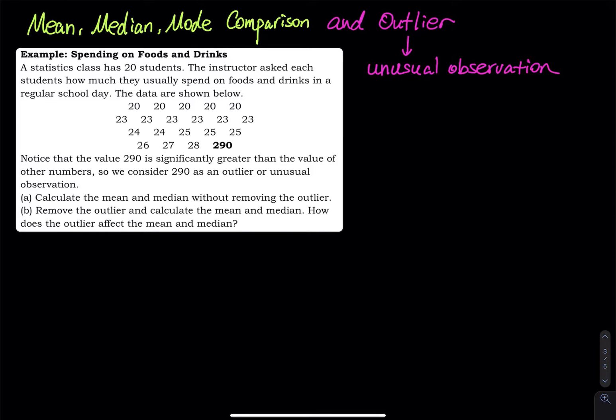So most people spend around 20, 23, 24, 25, 26, 27, 28 bucks, but somehow one student spent $290. So now we're thinking that the $290 can be an outlier, right? Because that looks unusual.